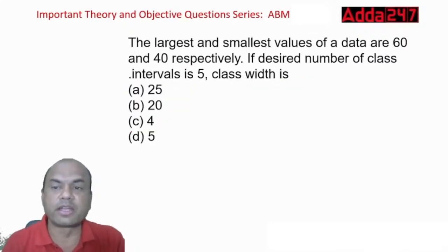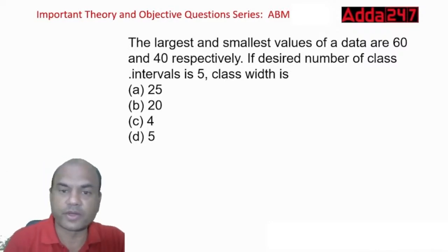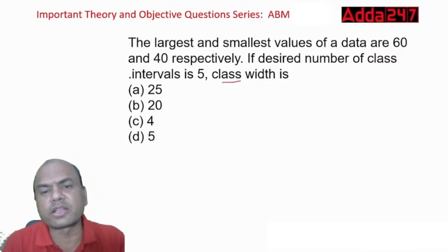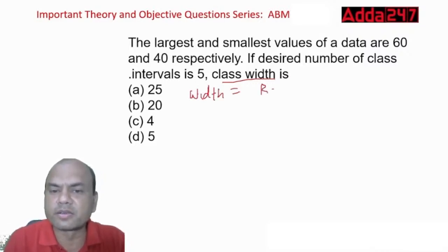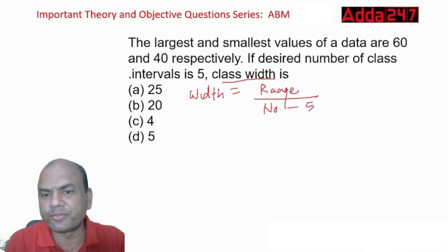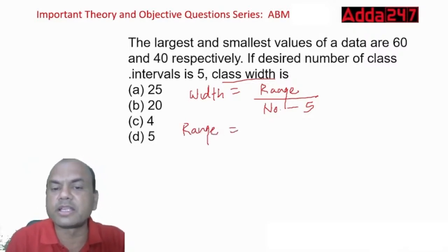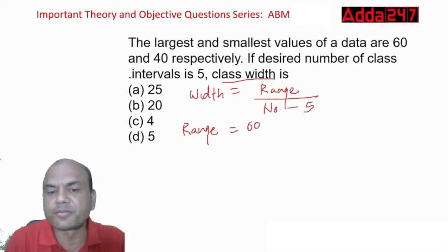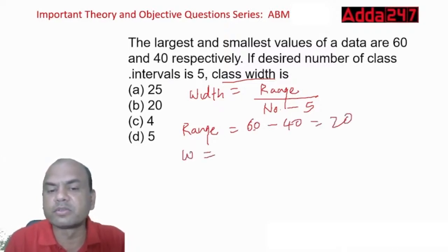The largest and smallest values of a data are 60 and 40 respectively. If the desired number of class intervals is 5, find the class width. Class width equals range upon number of classes. Range equals highest minus lowest: 60 − 40 = 20. So width equals 20/5, which equals 4.